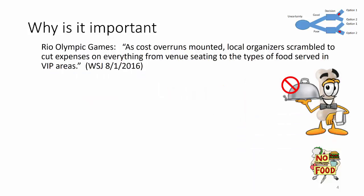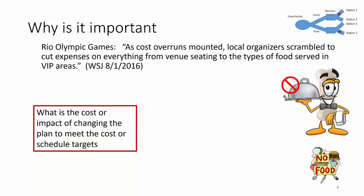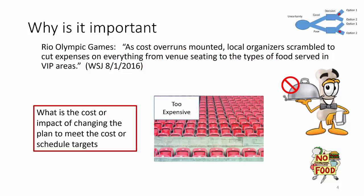The Rio Olympic Games that were recently completed — the quote was from the Wall Street Journal: as cost overruns mounted prior to the Games, local organizers scrambled to cut expenses on everything from venue seating to the types of food served in the VIP areas. What is the cost or impact of changing the plan to meet the cost or schedule targets? And what happened to all these empty seats?